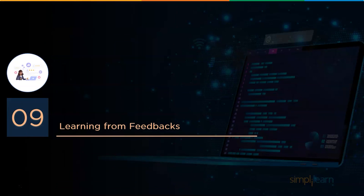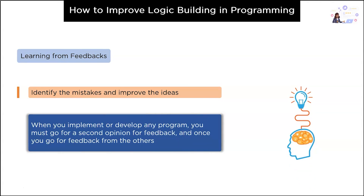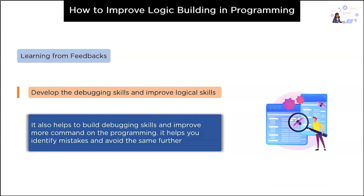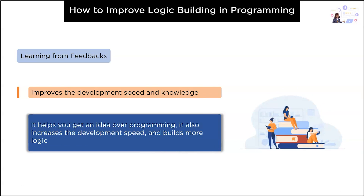Stage nine is about learning from feedbacks. One of the best ways to improve knowledge and build logic is learning from feedback. When you implement or develop any program, you must go for a second opinion or feedback. This helps you identify mistakes and avoid them in the future. Learning from feedbacks also helps build debugging skills and improves command on the programming language, increases development speed, and builds more logic.